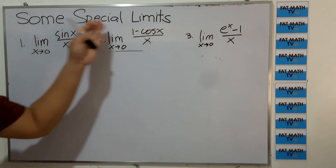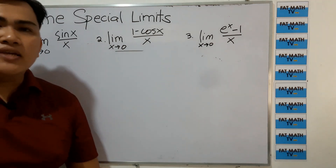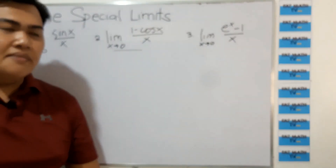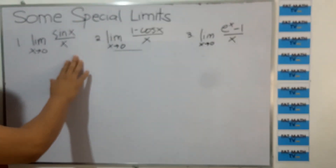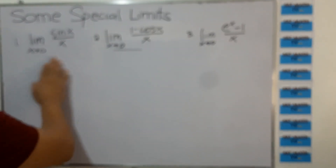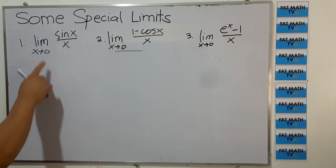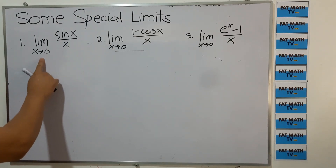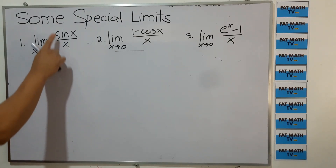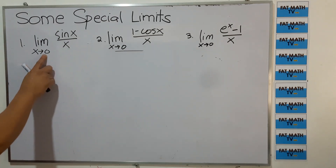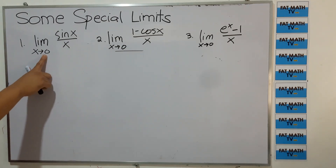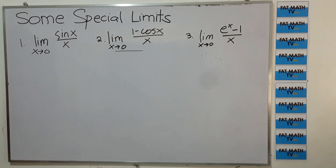In this video, we will look at some special limits. We have the limit of sin x over x as x approaches 0. We will investigate the values of sin x over x as x approaches 0 from the left and from the right.